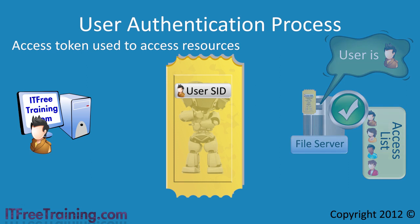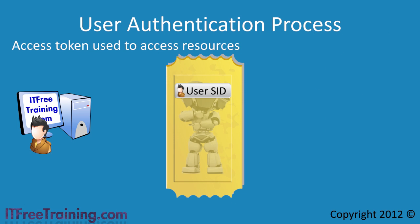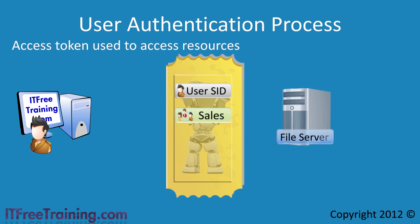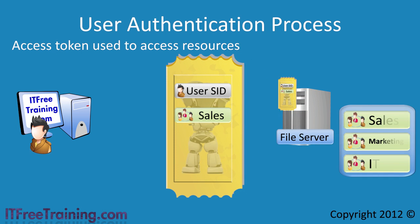If this user was a member of the sales group, for example, the sales group has its own SID. It's a simple matter of adding the sales group SID to the user's token when it is created. Now when the token is presented to another system, the other system checks its access list. In this case, the sales group is in the token and on the server's local access list, so the user will be given access.